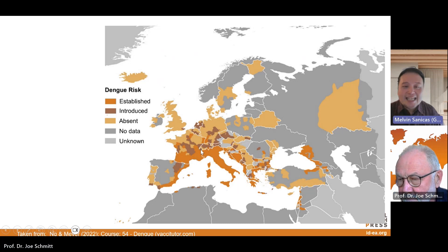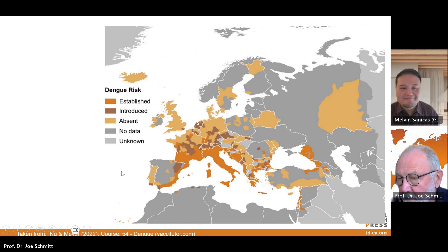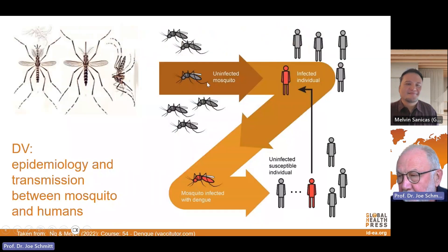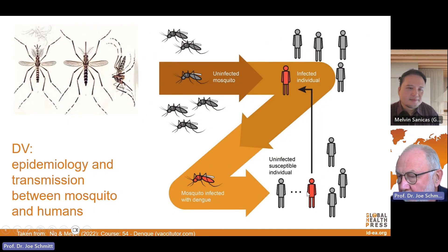So far, not yet in alpine regions, because these mosquitoes cannot really survive colder temperatures. But in the summer, it's possible. The infected human is the source for the mosquito to get infected, and the mosquito then with the next blood meal infects more humans, and that maintains the transmission cycle.